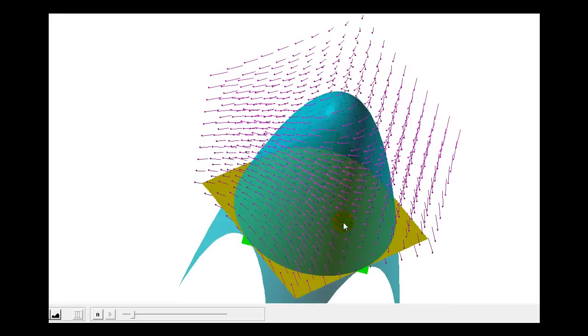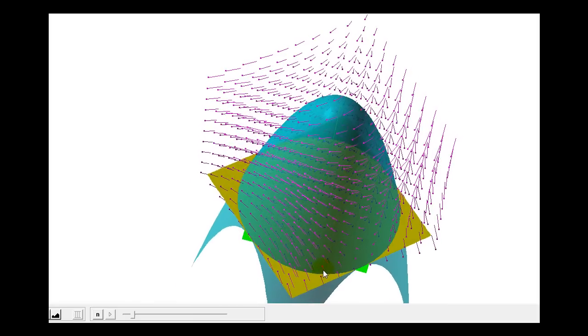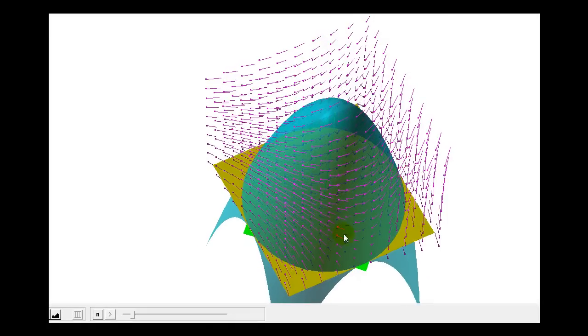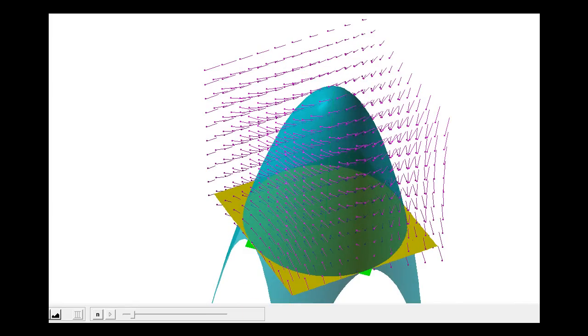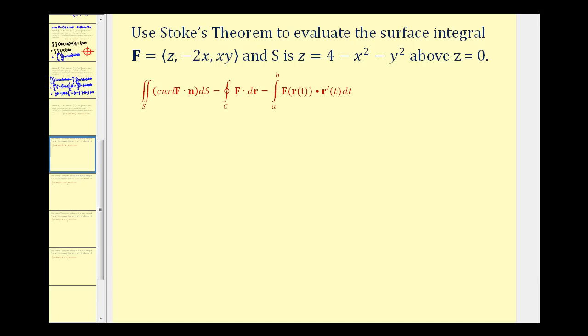Looking at this vector field, you can see that it looks like it will be clockwise based upon this vector field. So we should get a negative value, since it is in the opposite direction of our orientation. Let's go ahead and set this up.